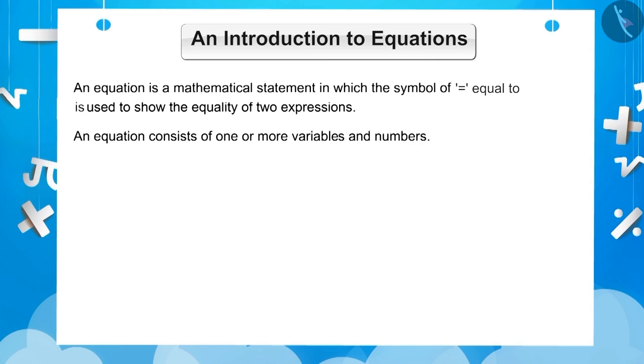For example, 6m plus 1 is equal to 13. This equation tells us that the sum of 6m and 1 is equal to 13. The equal to sign in an equation shows that the left-hand side value of this sign is equal to the right-hand side value.